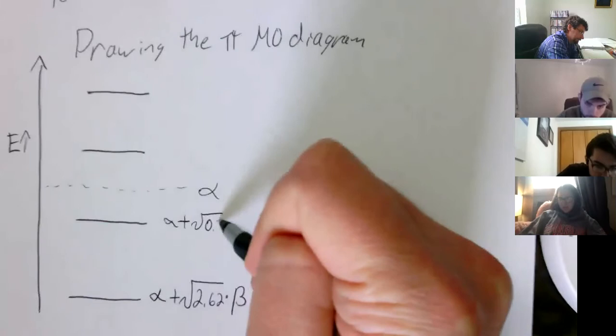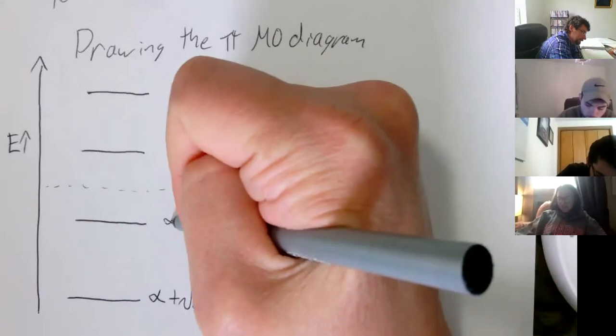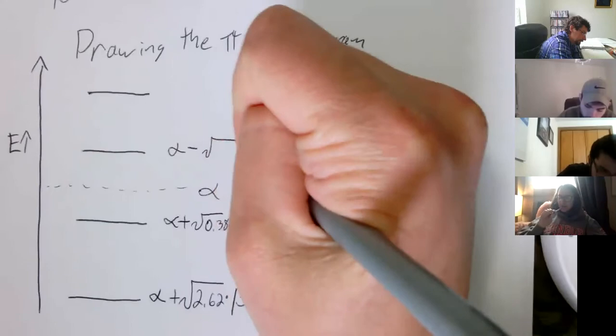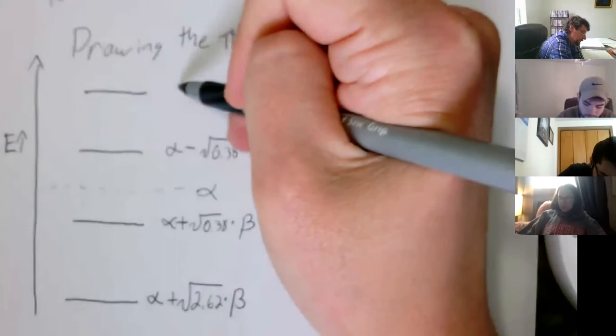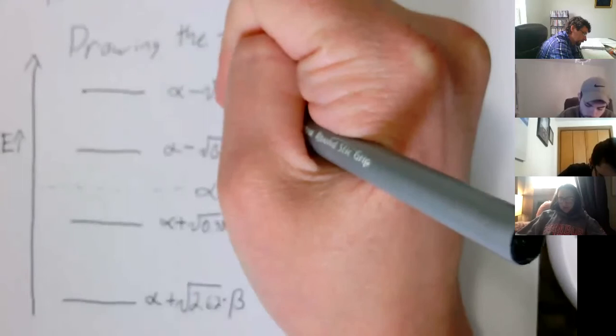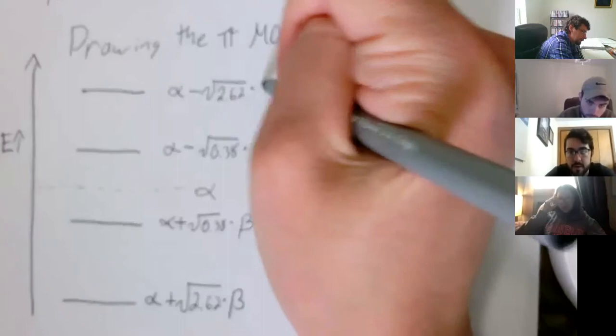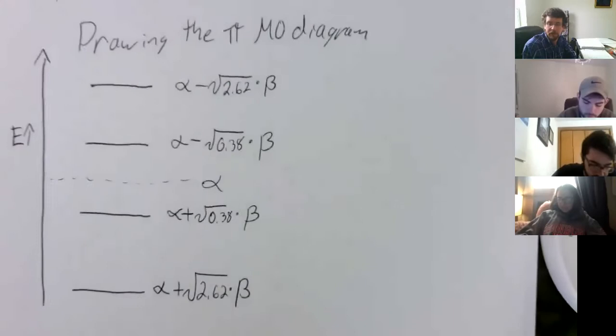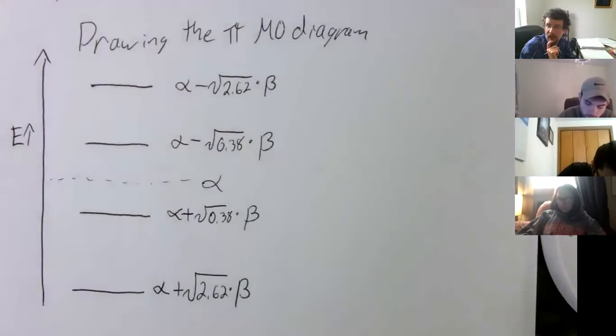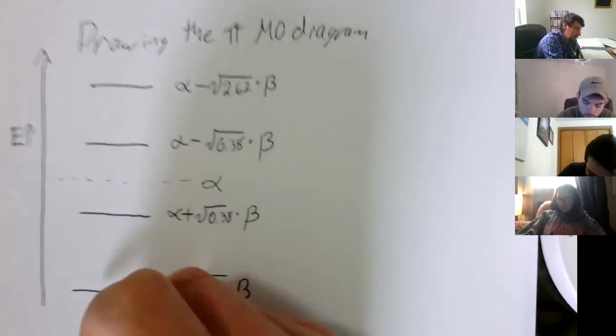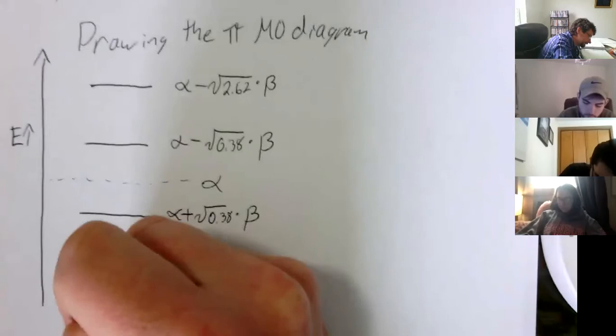And this is because alpha and beta are both negative, right? Yes. But it works out this way. They're both stabilizing. Okay. Looking back at our MO, or the number of PI electrons we have, how many electrons should we fill the system with? Four? Yep. Three, four.